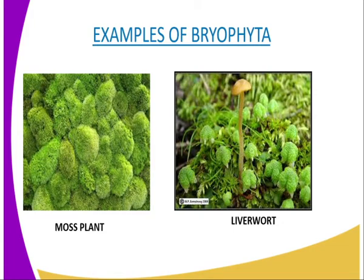Two: they lack a vascular transport system. What we mean by this is that the xylem and the phloem are not differentiated. Three: they contain chlorophyll and are photosynthetic. You can see from our diagram they are greenish in colour. The greenish colour is what we normally call chlorophyll, hence they can make their own food.